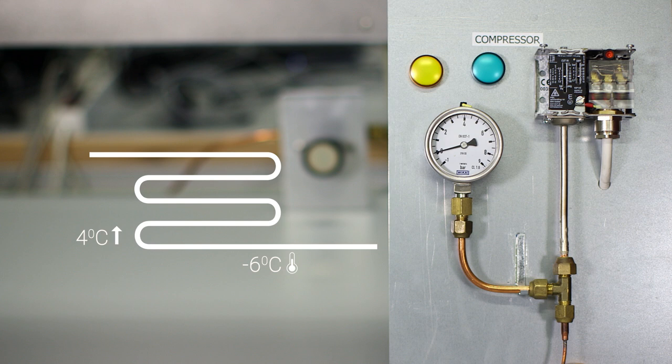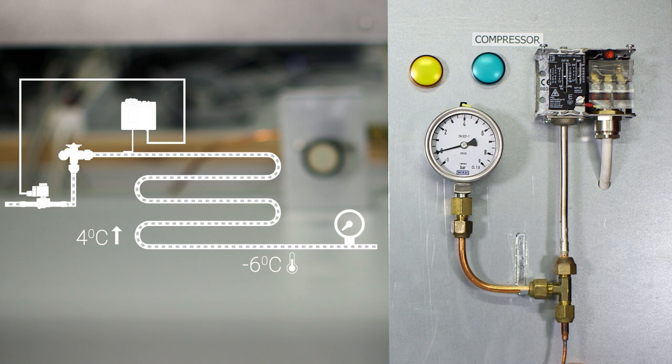So we want the compressor to cut in or start at 5 bar. That is when the evaporator outlet pressure has risen to 5 bar after the thermostat has opened the solenoid valve and the evaporator is fed refrigerant again. Remember that the solenoid is holding back liquid refrigerant under high pressure. So when the solenoid opens, the refrigerant will automatically start flowing into the evaporator and of course evaporate because of the relatively lower pressure inside the evaporator.